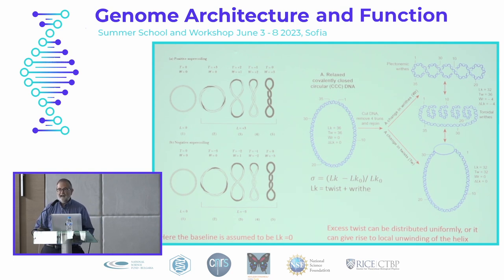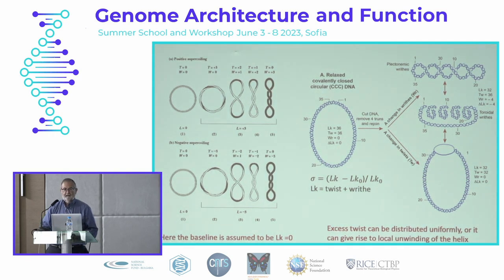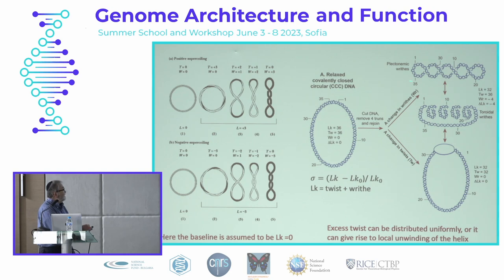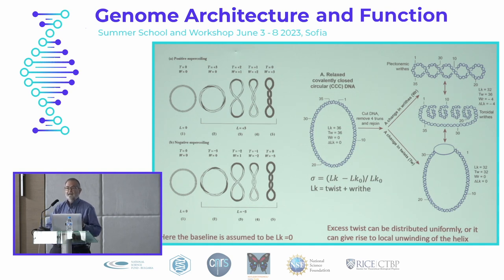I probably don't need to describe anymore what supercoiling is, given we've had a number of lectures discussing this. When you talk about supercoiling, you're initially talking about twisting the DNA. For this talk, that twisting occurs because of the transcriptional process. But the DNA has a mechanical life of its own — if you twist it enough, it might buckle. When it buckles, it can go from a ring structure into regions where the entire DNA wraps around itself. These are usually called plectonemes, characterized by a topological number called writhe.